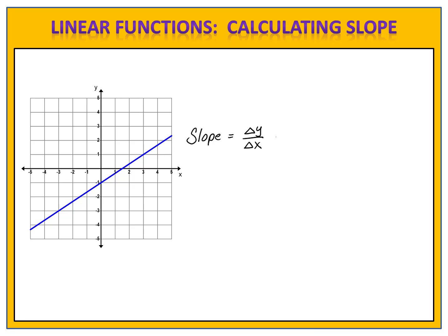We begin by looking at the graph and identifying what we call the lattice points. The lattice points are where the graph passes through the grid at a nice spot. We need to choose any two of those points — it doesn't matter which two we choose. I'll choose these two, and now we can begin to calculate the slope, knowing that we're looking for the change in y over the change in x.